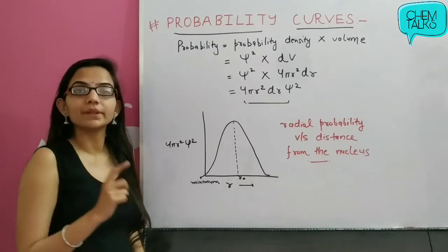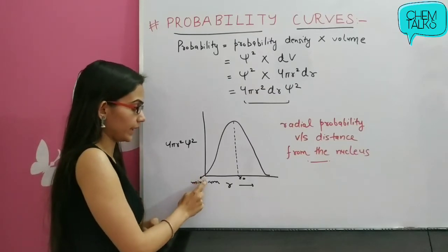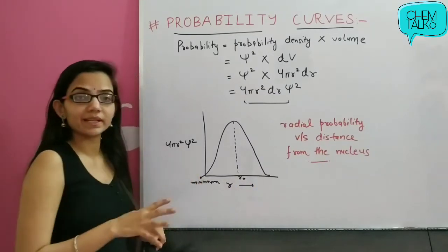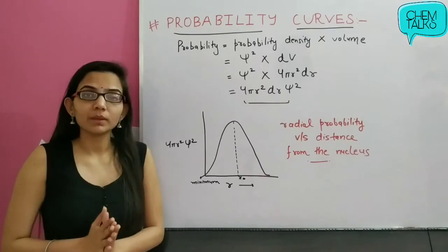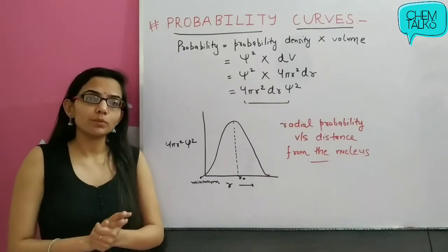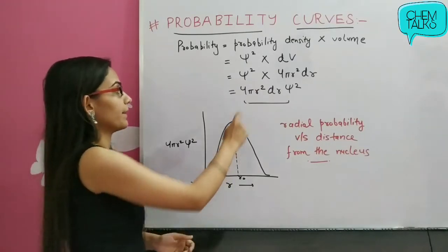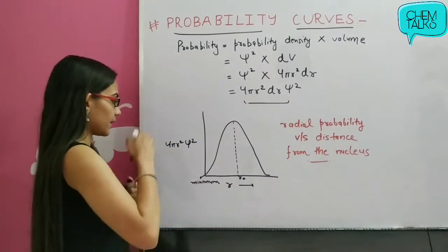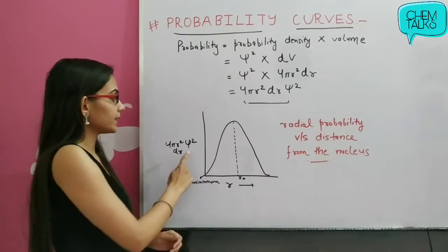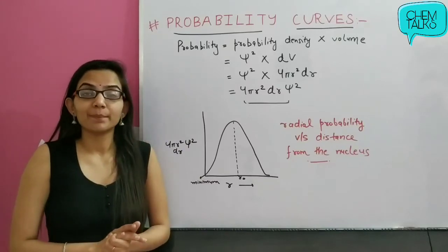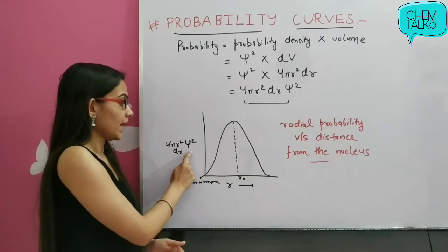We plot this radial probability distribution against the distance from the nucleus. At the point closest to the nucleus, the radius is minimum, meaning the volume of the shell dV = 4πr²dr is also minimum. So the 4πr²dr term is minimum here. However, psi-square is maximum at the nucleus. So we have two competing factors: as the radius increases, the volume term increases, but the probability density psi-square decreases.